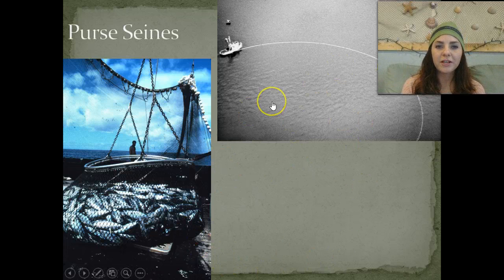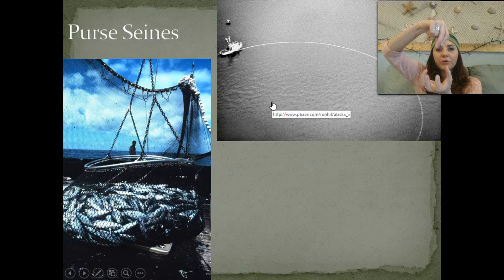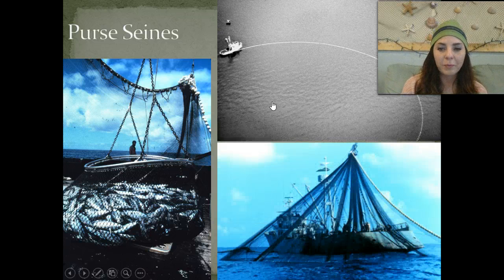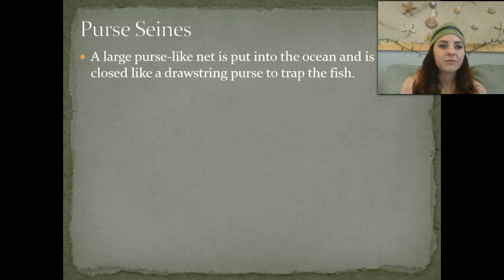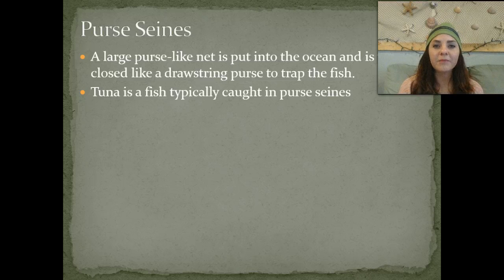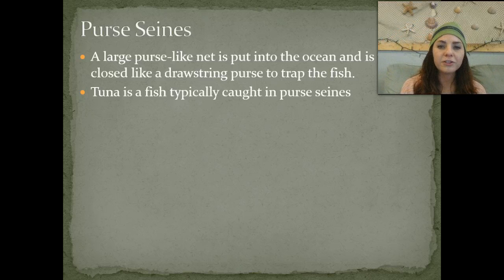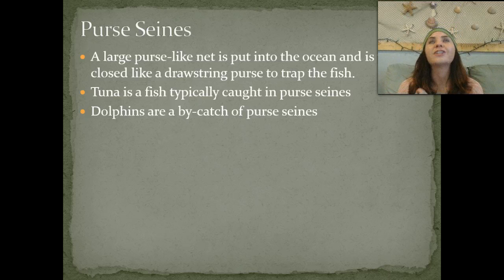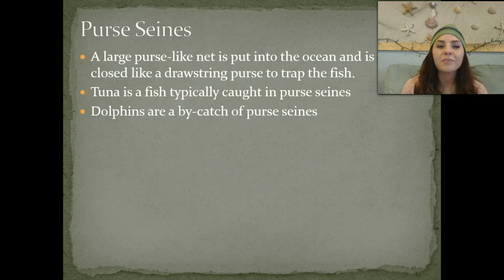Purse seines are large purse-shaped nets put into the ocean and then closed like a drawstring purse to trap fish—you pull the string and the purse closes, entrapping all of the fish. Tuna is the fish we typically catch in purse seines. Dolphins are a huge bycatch when using these purse seines. If you go to the store, you'll see dolphin-safe tuna, but just because it says dolphin-safe doesn't mean dolphins weren't part of the bycatch—it just means they use a specialized net that tries to exclude dolphins, though we do still have some dolphins caught as bycatch.